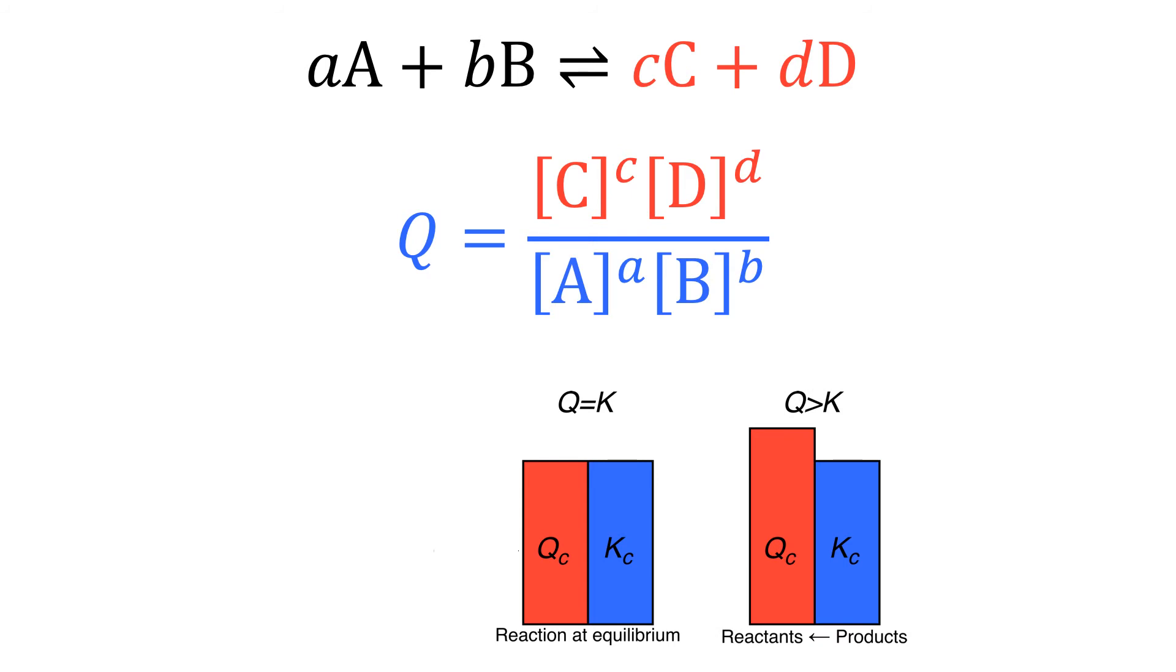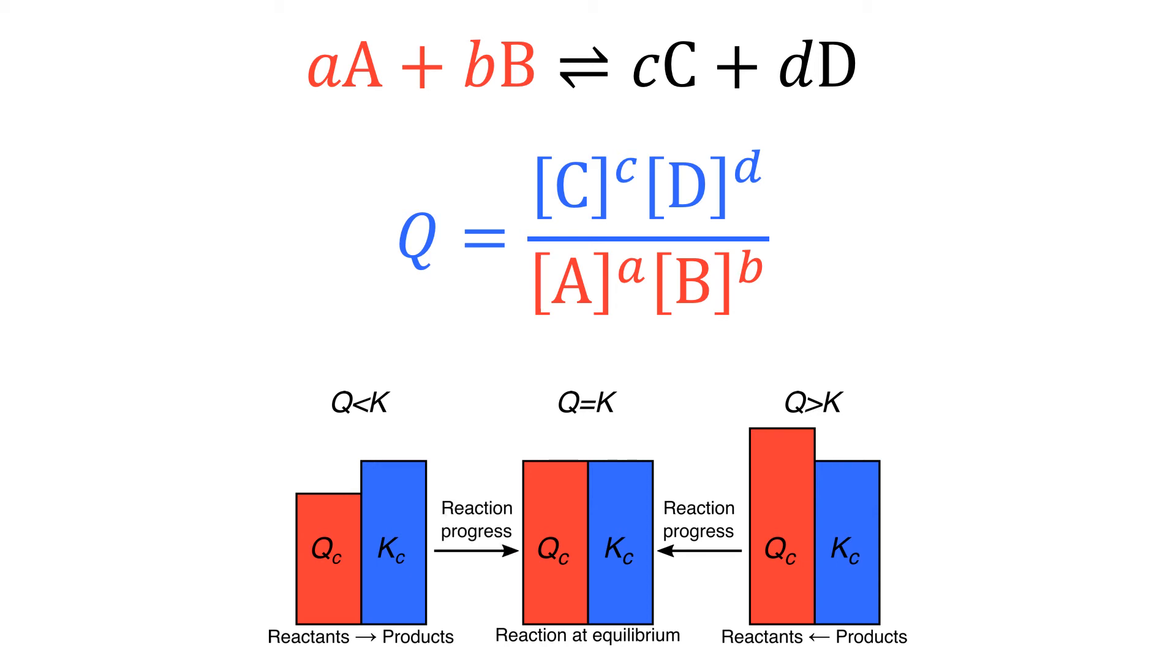If Kc is smaller than Q, then Q is more on the product side and the reactants will be formed in order to reach equilibrium. If Kc is bigger than Q, then the equilibrium is on the reactant side and more products will be formed to equilibrate. When Kc is equal to Q, the system is at equilibrium.